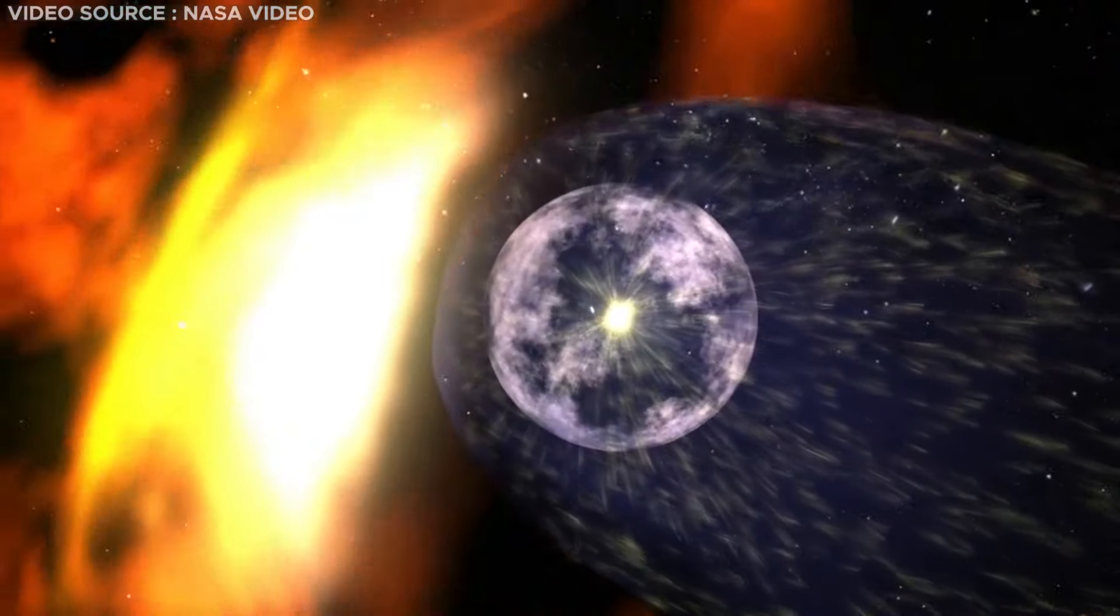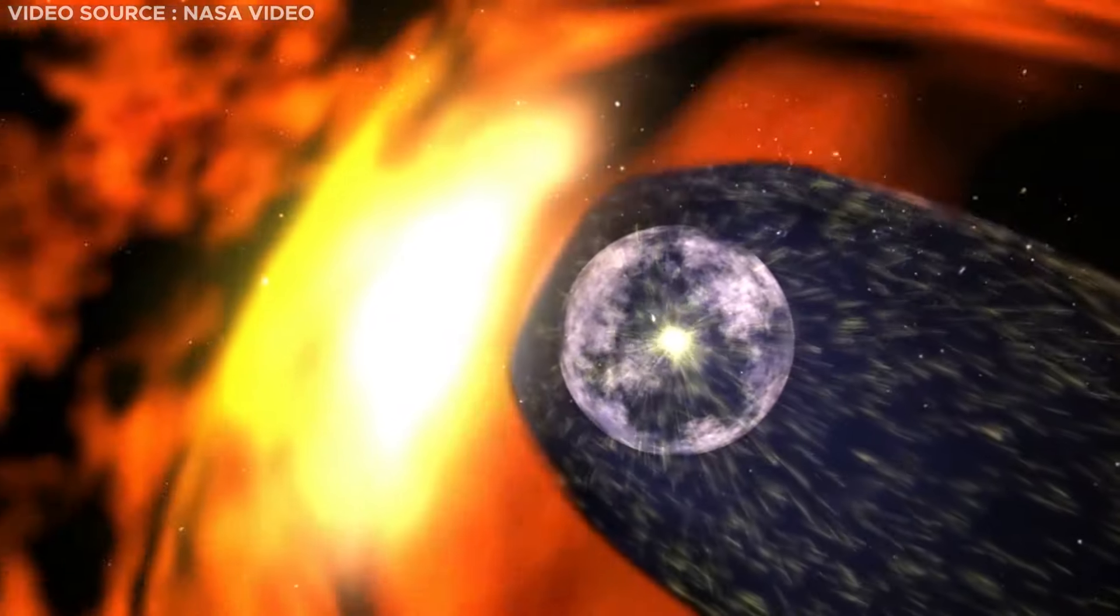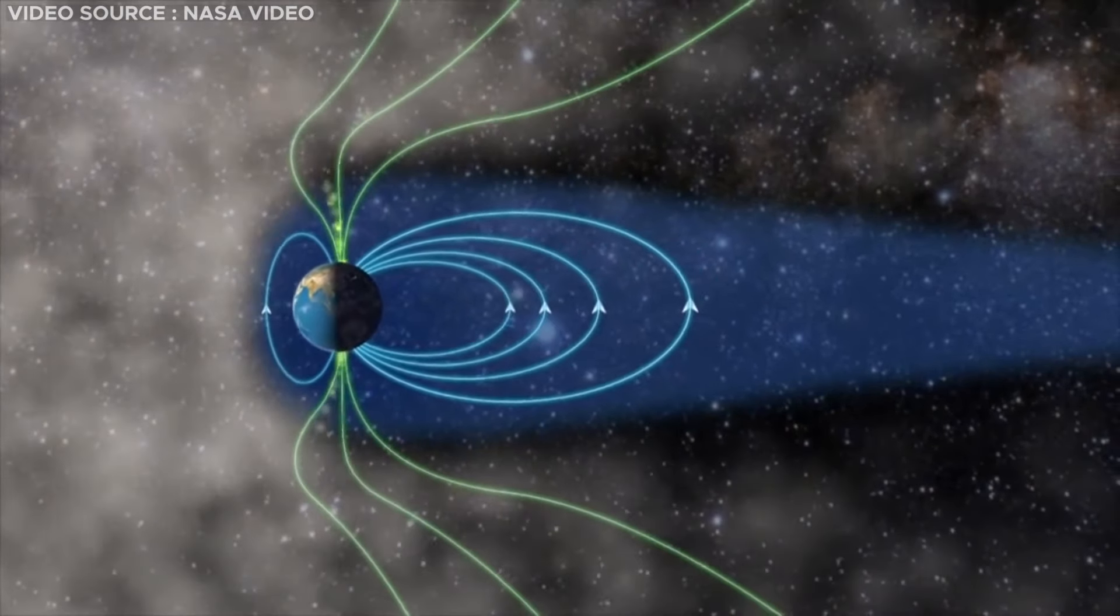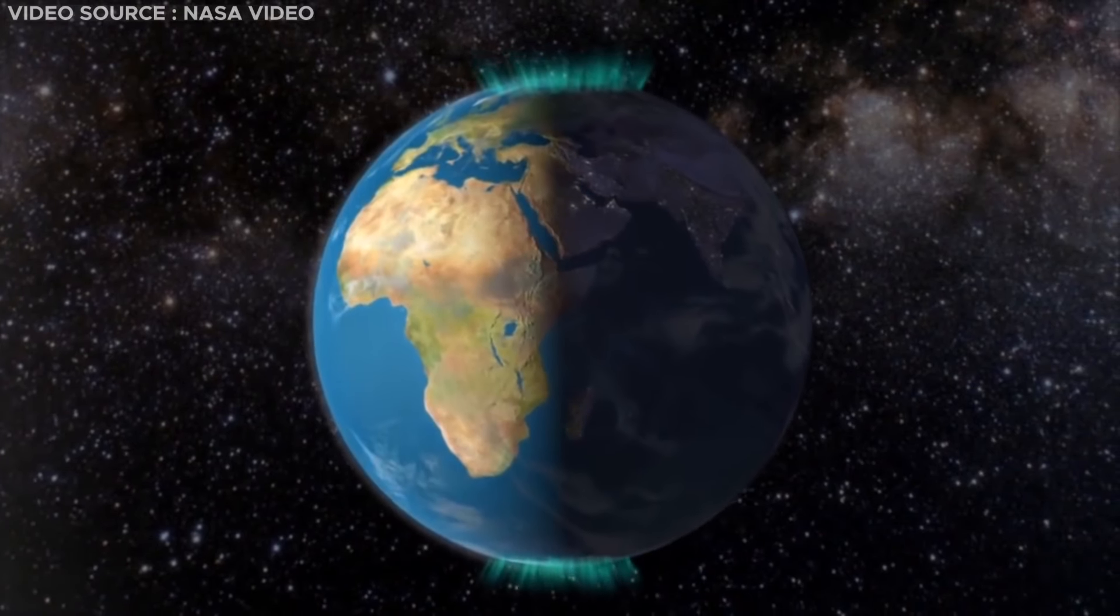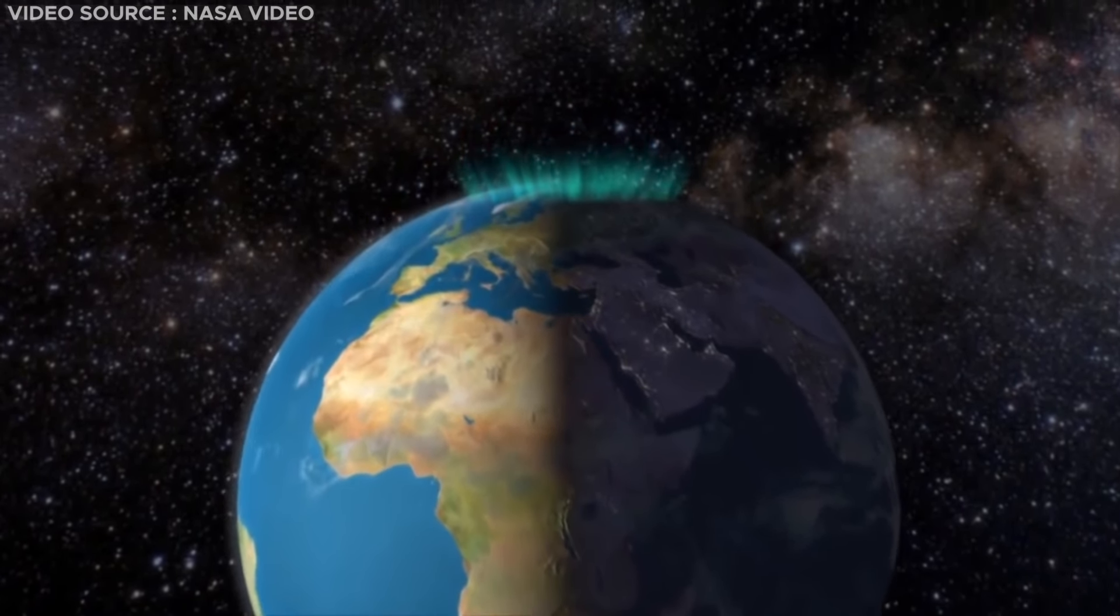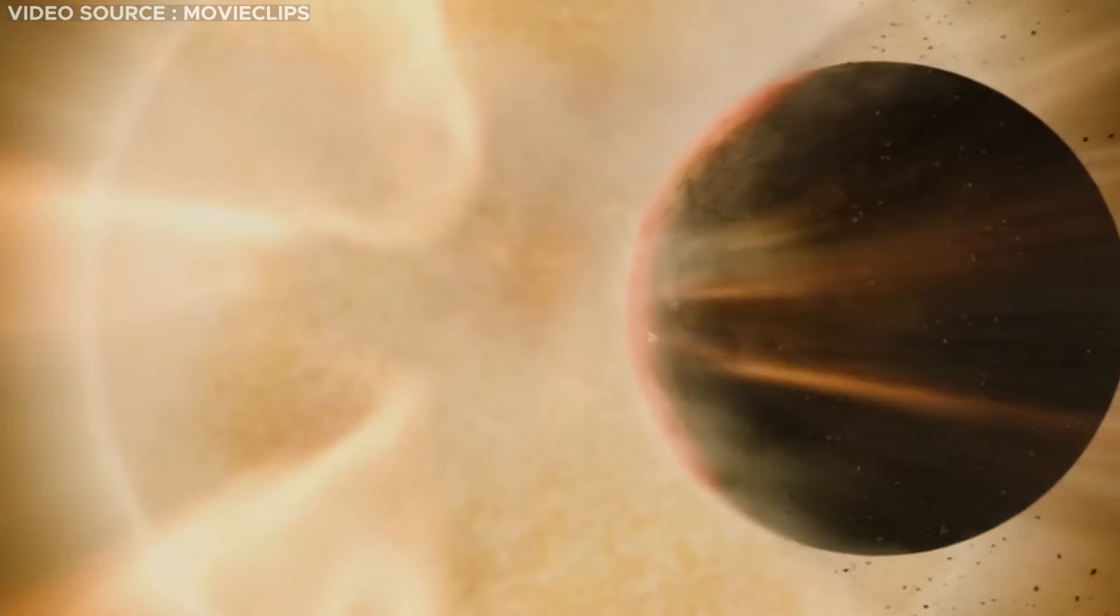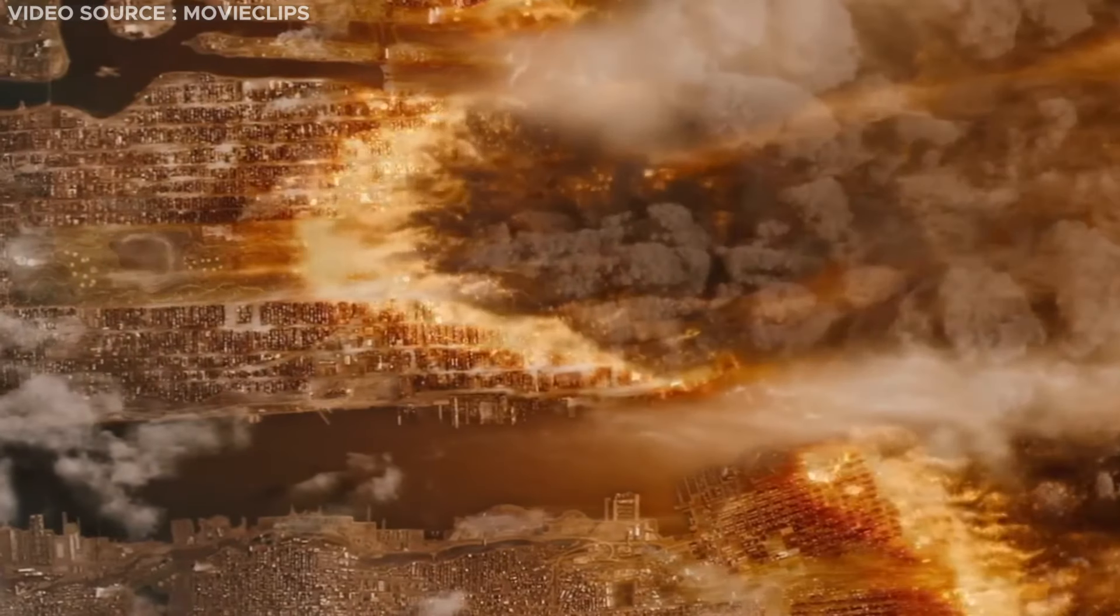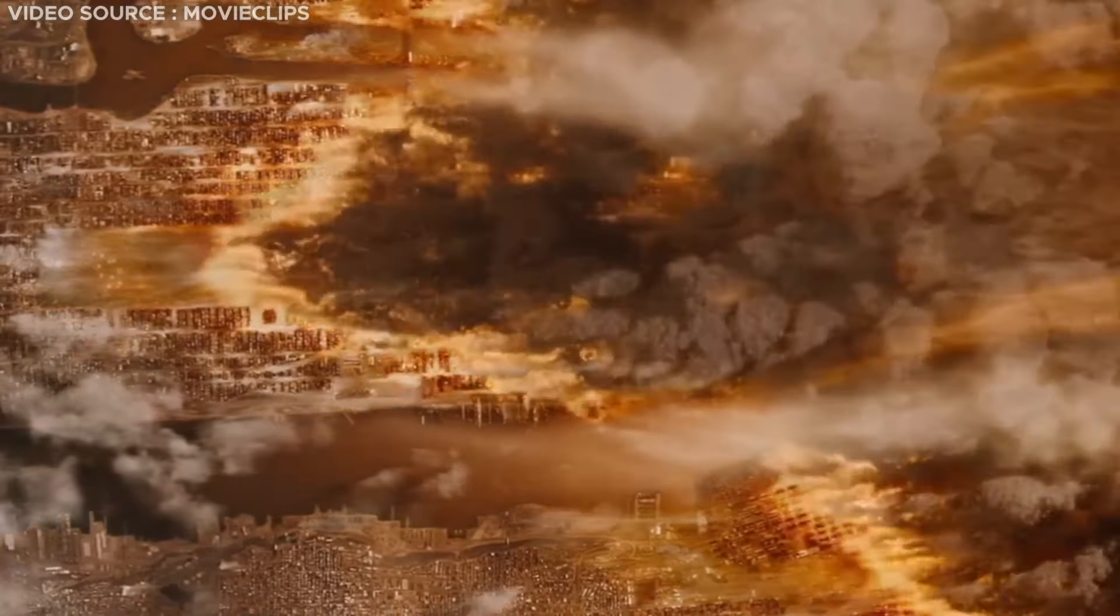The magnetic field effectively blocks these radiations from reaching the Earth's surface, but when they manage to penetrate, they interact with the atmosphere, resulting in the mesmerizing auroras, commonly known as the northern or southern lights. The absence of this protective magnetic field could pose a threat to humanity, as direct exposure to such radiation could have adverse effects.